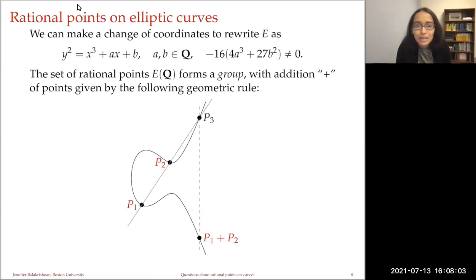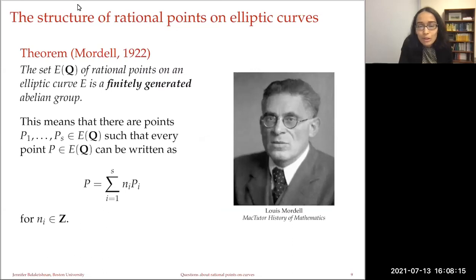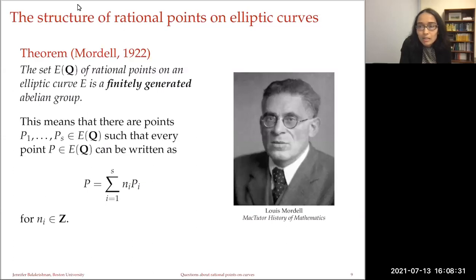Now that we know we have the extra structure of a group, what else can we say about the set of rational points? A very nice theorem proved almost 100 years ago by Mordell was that the set of rational points on an elliptic curve is actually a finitely generated abelian group. That means any rational point on the elliptic curve can be written as a Z-linear combination of a distinguished set of points P1 through Ps — finitely many generators. So any rational point can be described in terms of those finitely many generators. This is a nice way to think about the elliptic curve and its rational points.